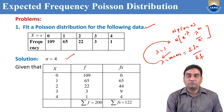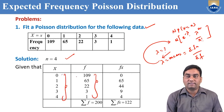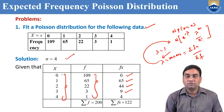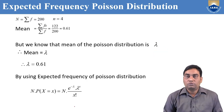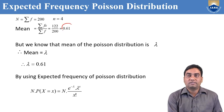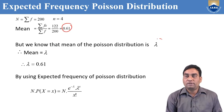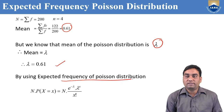Here small n equals 4, with x values from 0 to 4, and frequency f values also given. Computing f·x: 0×109 = 0, 1×65 = 65, 2×22 = 44, 3×3 = 9, 4×1 = 4. Adding these gives Σfx = 122, and Σf = 200, which is capital N. So mean = 122/200 = 0.61. Therefore lambda = 0.61. After getting lambda, we can find the expected frequency of Poisson Distribution using the formula.